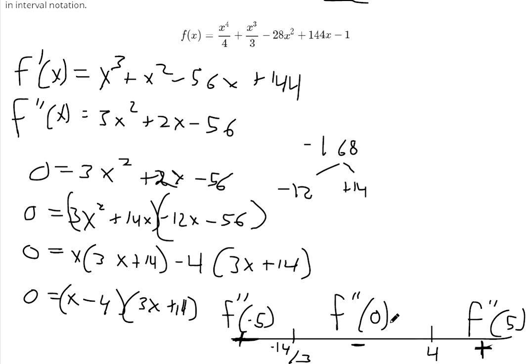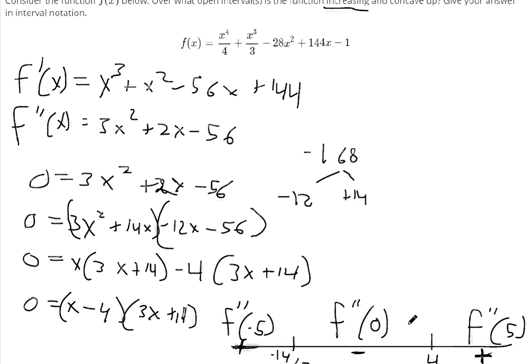So they are inflection points. It changes concavity between negative 14 over 3, it's positive to negative. And at x equals 4, it goes from negative to positive. Okay, but the question was, where is it concave up?